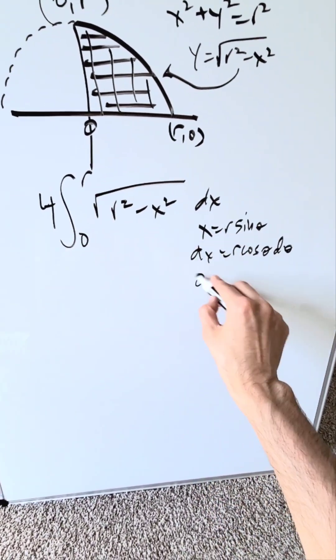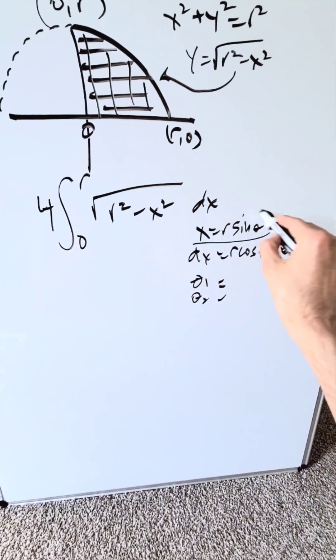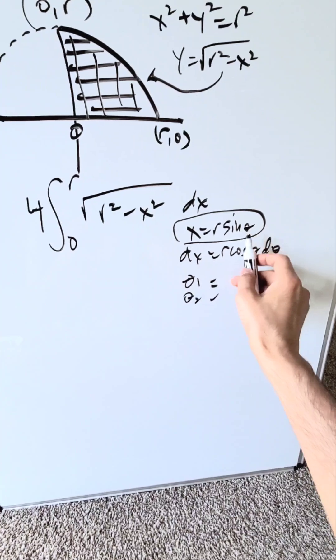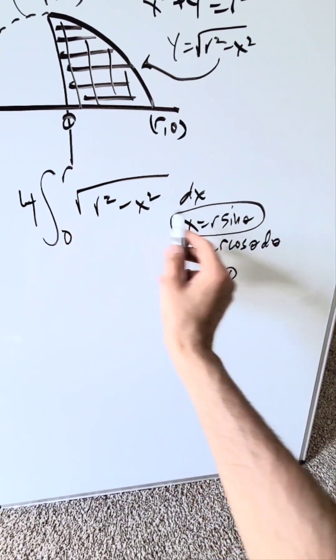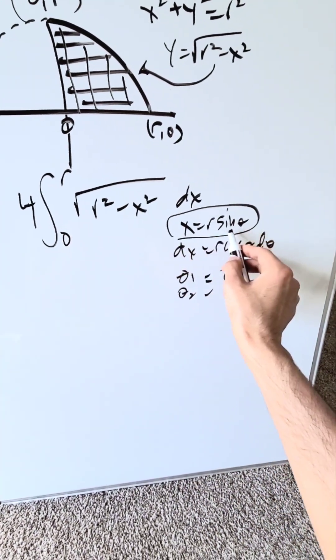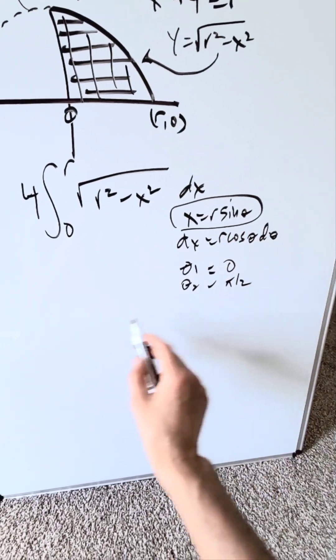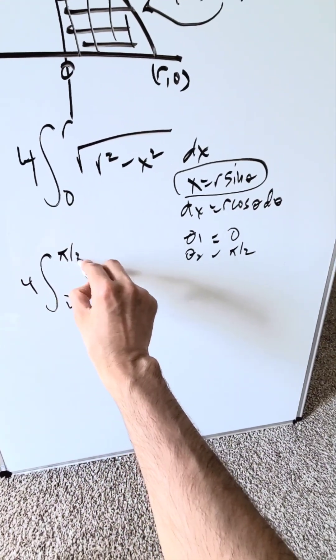This is 0 and r. Your new limits will be theta 1 and theta 2, everything with respect to this. If x is equal to 0, you're looking at theta in your solver, you're getting a 0. If x is equal to r, you run that through. r is equal to r sine theta, theta is equal to inverse sine of 1, that will be a pi over 2. Your new limits will be 4 and then 0 to pi over 2.